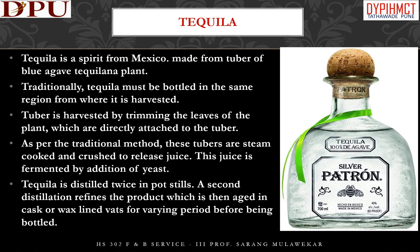Let us now see an interesting spirit — tequila. Tequila distinguishes itself by its unique way of consumption: it is generally consumed neat with a lemon wedge and a pinch of salt. Tequila is a spirit from Mexico, made from the tuber of the blue agave plant. Traditionally, tequila must be bottled in the same region from where it is harvested. The tubers are harvested by trimming the leaves of the plant, then steam-cooked and crushed to release juice. This juice is fermented by addition of yeast. Tequila is distilled twice in pot stills, then aged in casks or wax-lined vats for varying periods before being bottled.